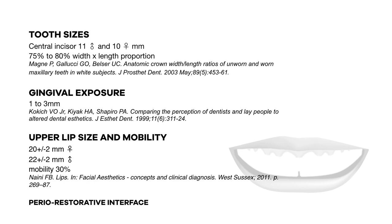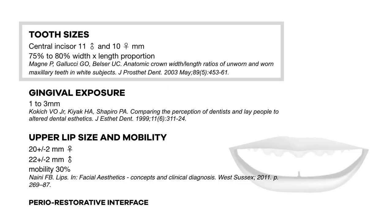Now we define the gingival level. Once we have defined the incisal edge position and the new gingival level, we are basically defining the vertical position of the new central incisor, and also the tooth size. There are a few factors to consider when establishing the new gingival level. One of the most obvious is the average tooth size — in women, the average is about 9 to 10 millimeters, and in men between 10 and 11 millimeters. Another fundamental factor is the amount of gingival exposure during the smile, which is defined by the dynamic position of the upper lip during the smile and by the gingival levels.